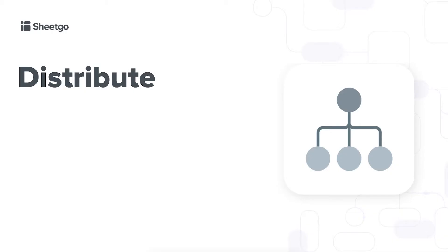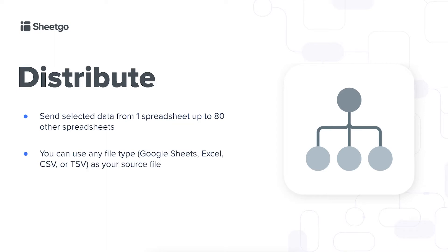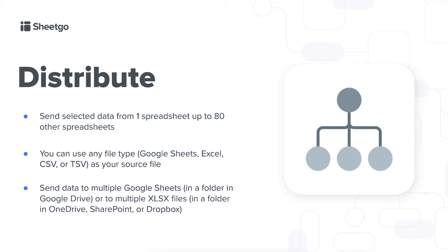In this video I'll show you how to use SheGo's Distribute connection. With our Distribute feature you can send selected data from a single spreadsheet up to 80 other spreadsheets, and you can use any file type — Google Sheets, Excel, CSV or TSV as your source file. You can then send data to multiple Google Sheets in a folder in Google Drive, or to multiple XLSX files in a folder in OneDrive, SharePoint or Dropbox.